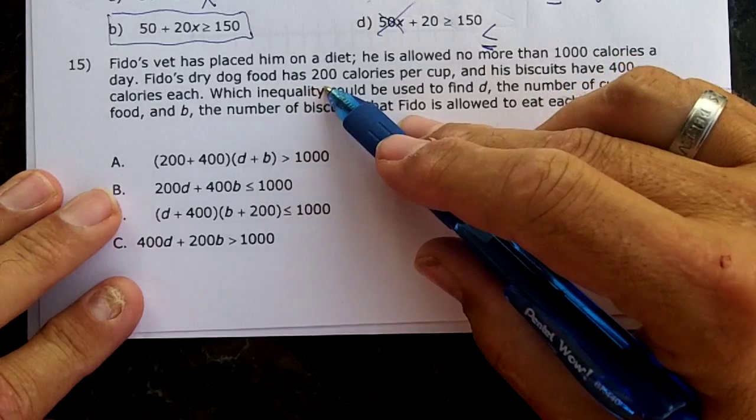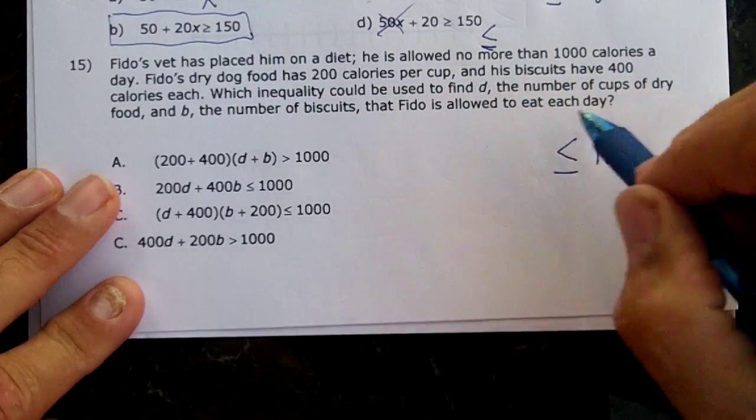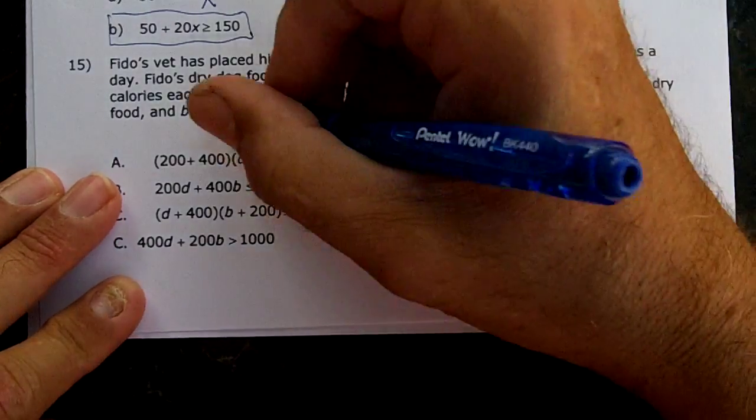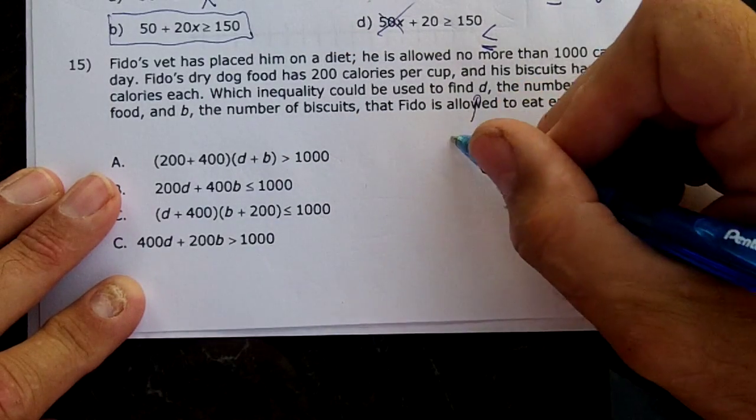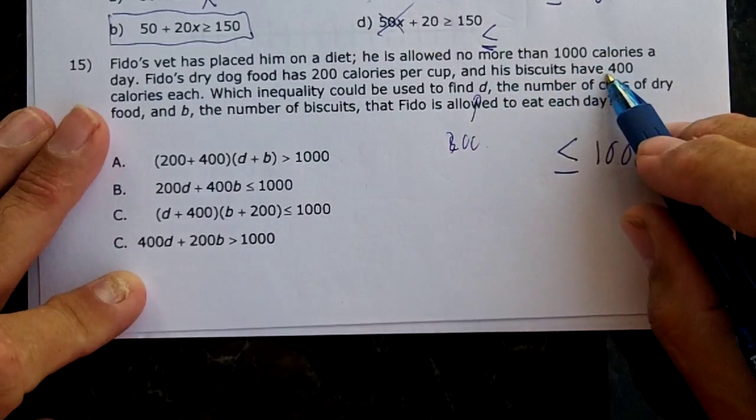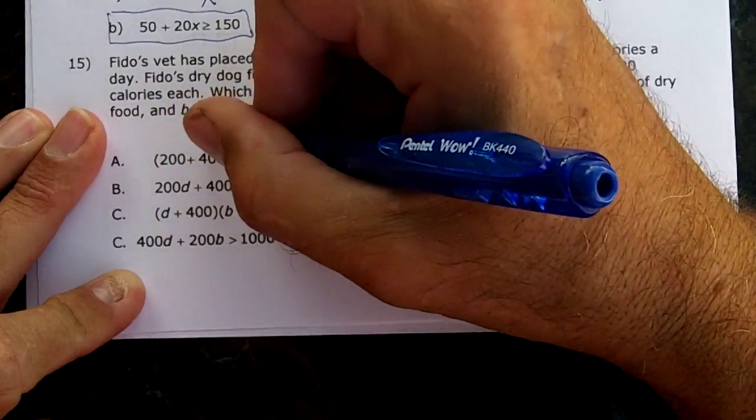Fido's dry dog food has 200 calories per cup, and we're going to use D for the number of cups. His biscuits have 400 calories each, and we're going to use B for the biscuits.